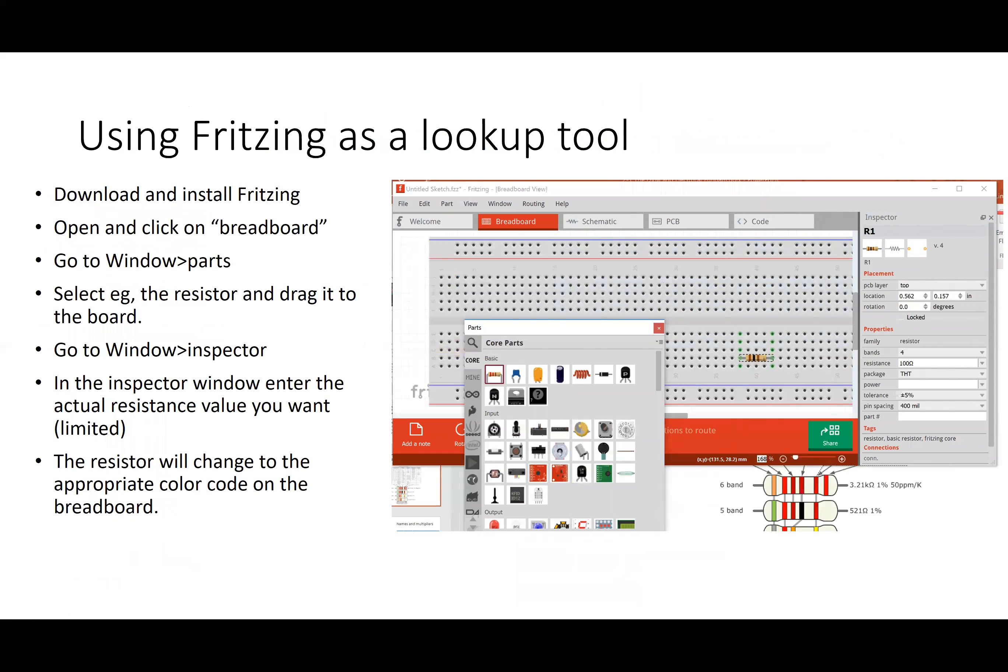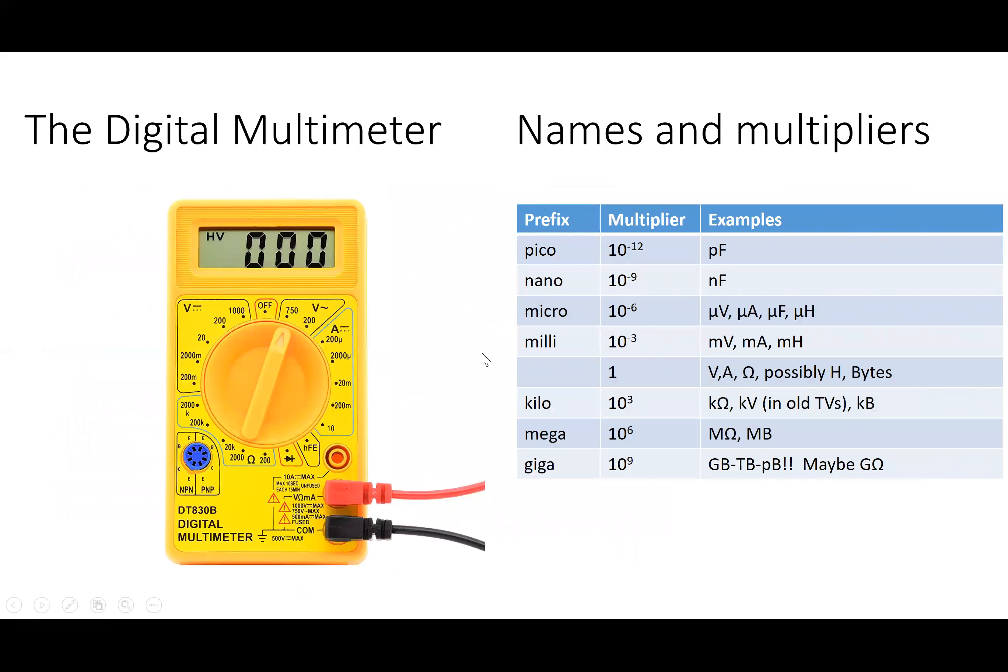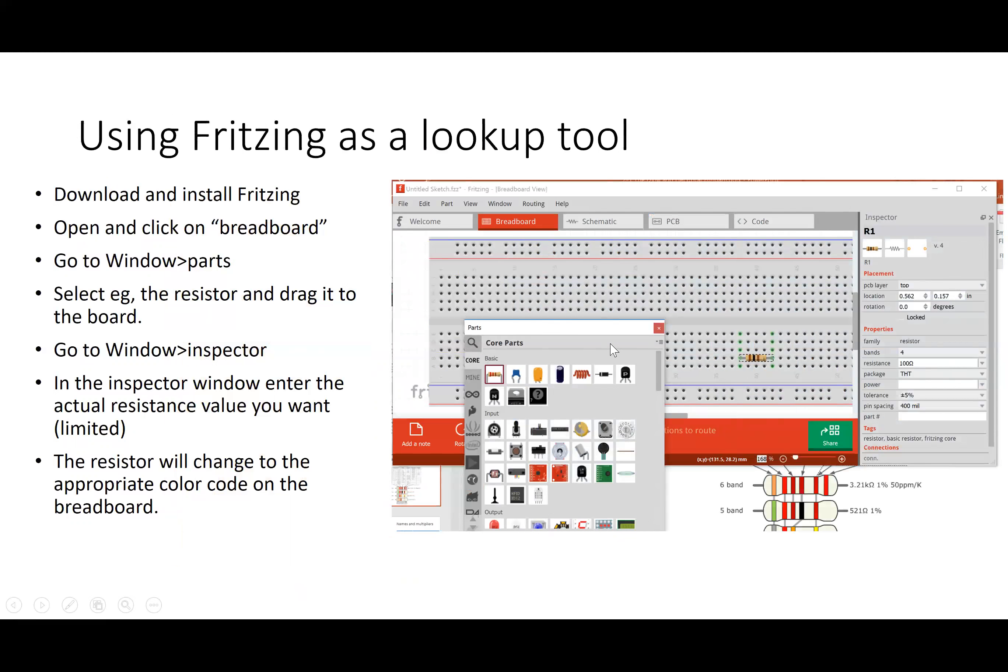If you've downloaded Fritzing to design your circuit layouts, you can try placing a resistor on the board by going to the parts window and under core parts clicking on the resistor and dragging it onto the board. If you go to the inspector window, it will tell you the value of the resistor, here 100 ohms. If you change that to 1000 ohms or 1k, it will then give you brown, black, red. So it'll show you the correct color code.